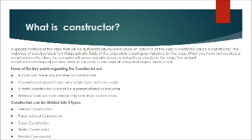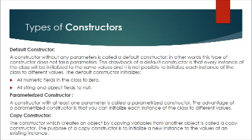Constructors can be divided into five types: default constructor, parameterized constructor, copy constructor, static constructor, and private constructor. A constructor without any parameters is called a default constructor. The drawback of a default constructor is that every instance of the class will be initialized to the same values, and it is not possible to initialize each instance to different values. A constructor with at least one parameter is called a parameterized constructor. The advantage of a parameterized constructor is that you can initialize each instance of the class to different values.